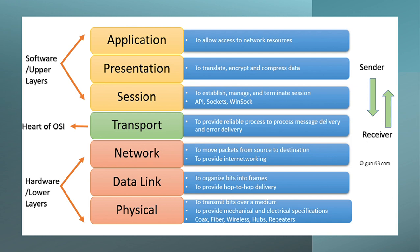We have a total of seven layers: application layer, presentation layer, session layer, transport layer, network layer, data link layer, and physical layer. The upper layers are related to software, which are application, presentation, and session. Transport is the heart of the OSI model.